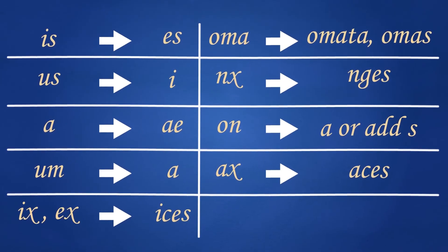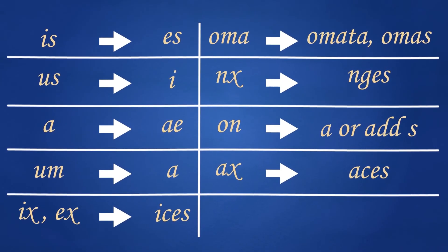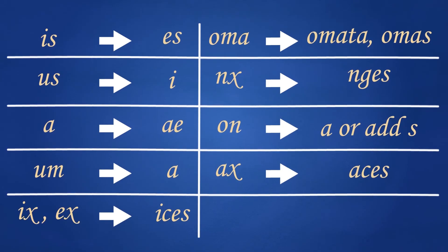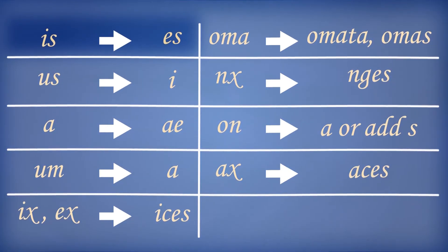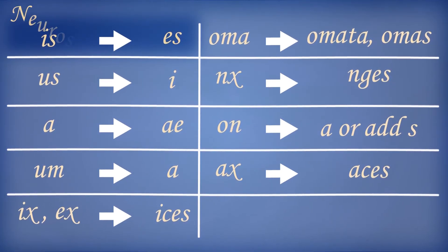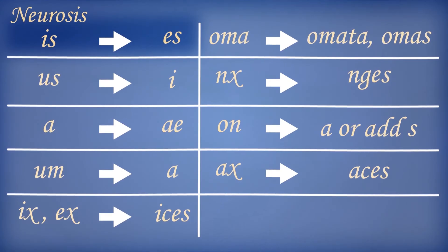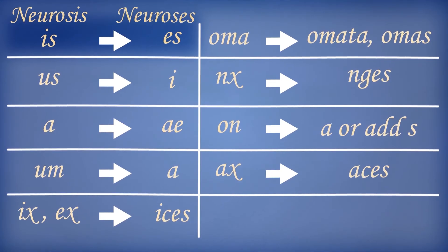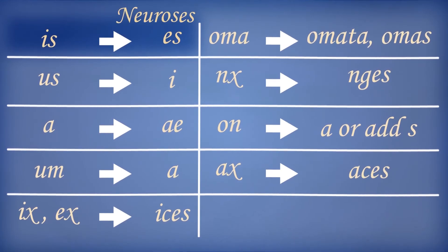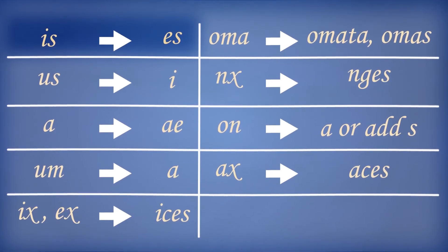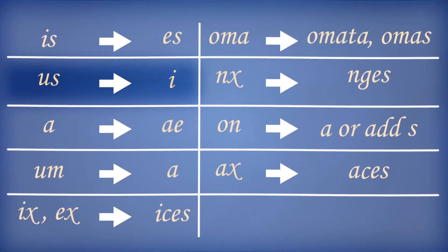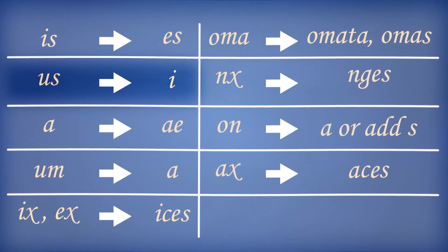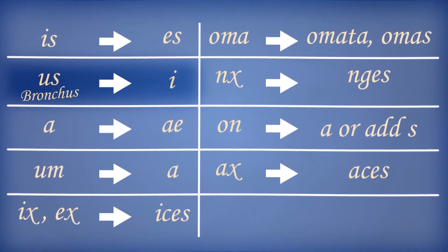For example, to form the plural of singular terms ending in is, change the i to an e, as the term neurosis is changed to neuroses. To form the plural of many singular words ending in us, change the us to an i, like the term bronchus is changed to bronchi.